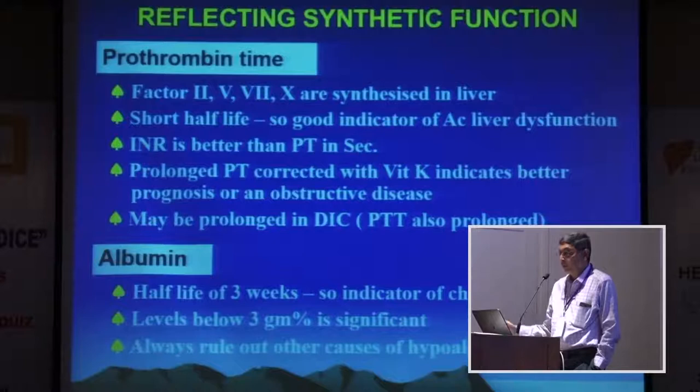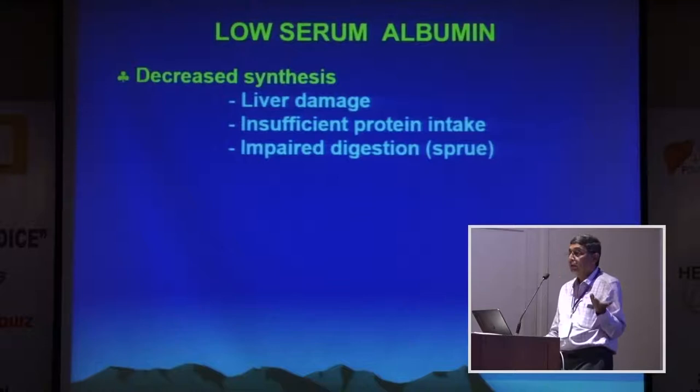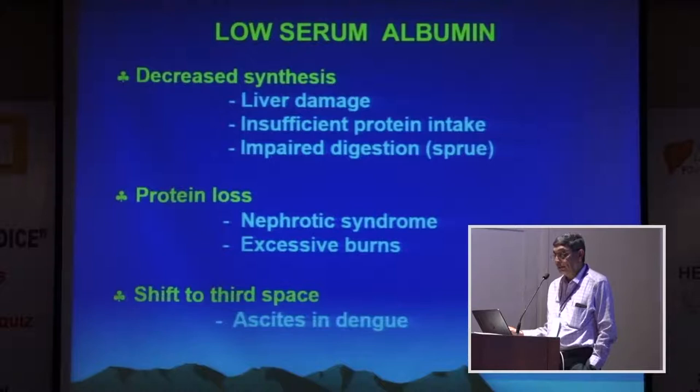Albumin has a half-life of three weeks, so it's a good indicator of chronic disease. Levels below 3 grams percent are considered significant, but always rule out other causes of hypoalbuminemia. Causes of low serum albumin include: decreased synthesis from liver damage, insufficient protein intake or impaired digestion, protein loss from nephrotic syndrome or excessive burns, and shift into third space as in dengue and ascites. Don't go primarily after liver disease just because you get a low albumin.